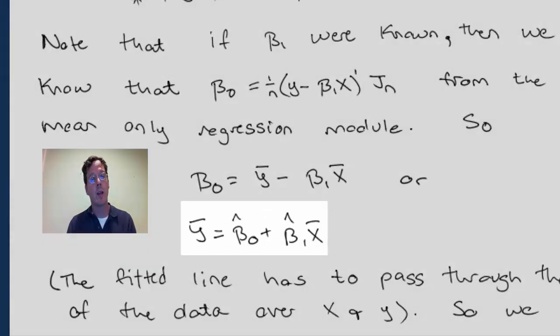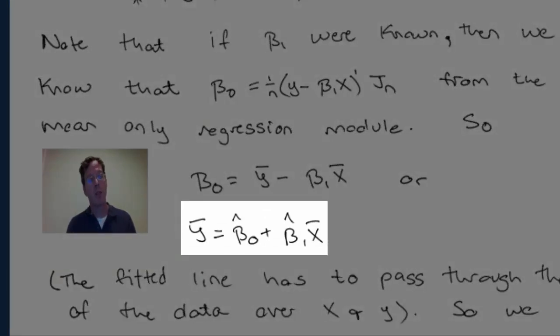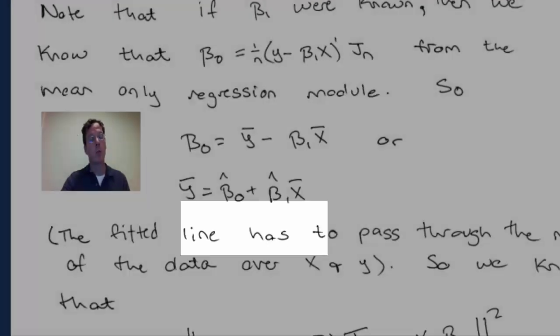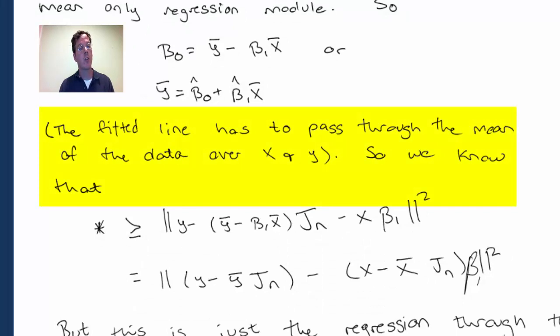Or in other words, what we're saying is that y-bar must equal beta 0-hat plus beta 1-hat x-bar once we get our solutions. This is exactly saying that the solution has to go through the point y-bar x-bar.